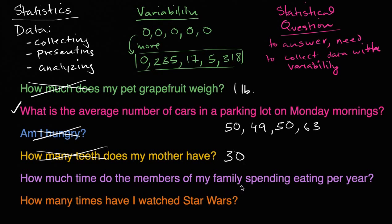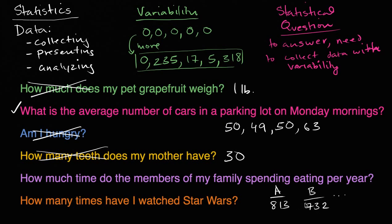How much time do the members of my family spend eating per year? I would have to observe or survey my family members — my mom, my wife, my children, my uncles, aunts — and ask how much do you eat each day, then add it all up. Family member A might eat 813 hours in a year, family member B might eat 732 hours. I'm collecting multiple data points from different family members, and there's likely to be variation. So I'm definitely collecting data with variability — that is a statistical question.